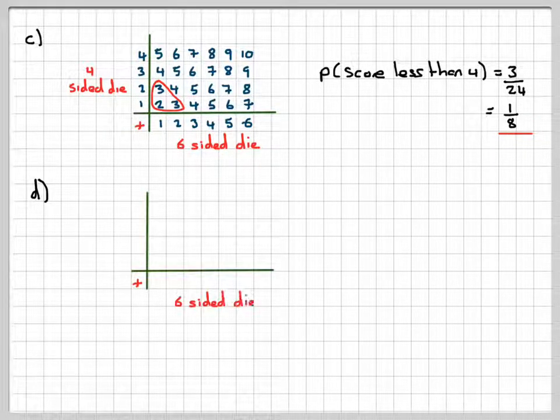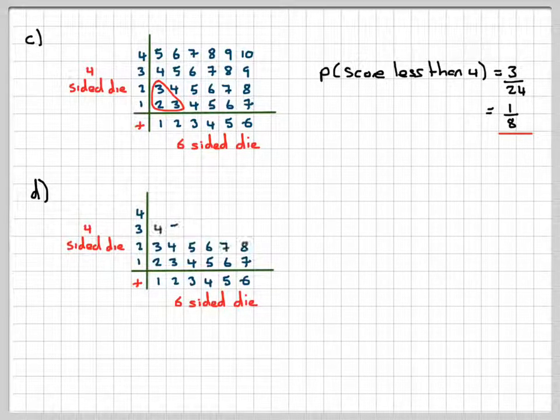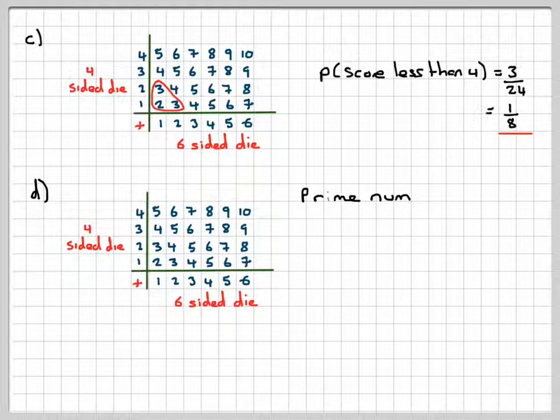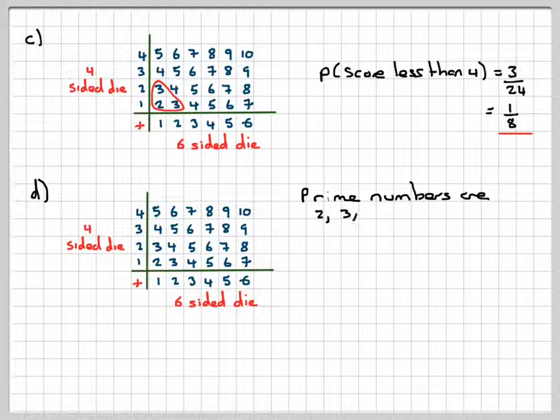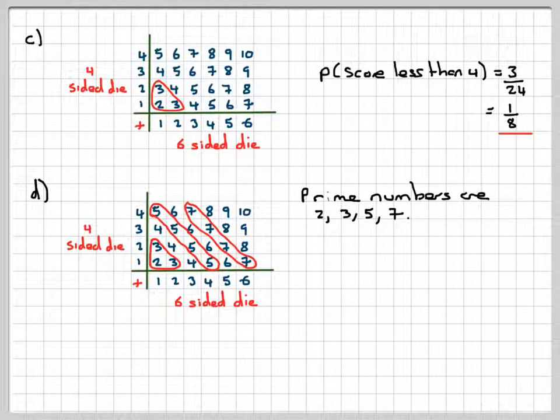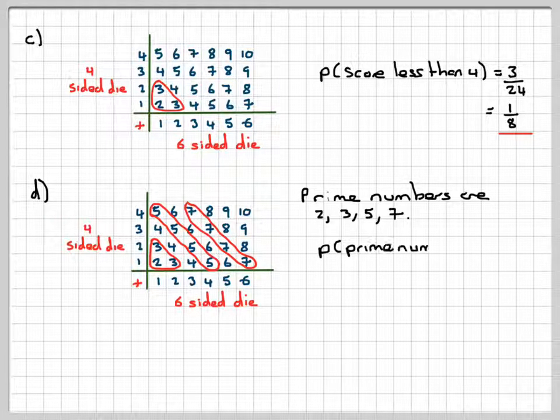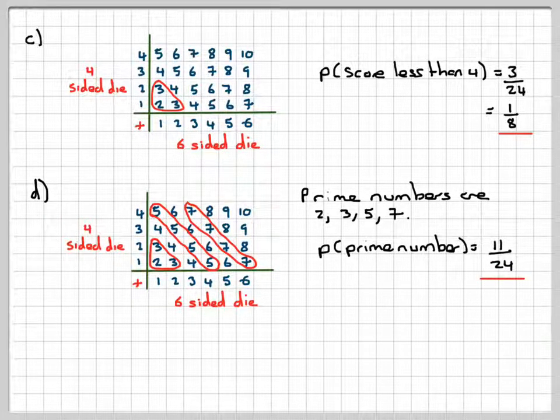Part D. Probability of being a prime number. So the prime numbers here between 2 and 10 are 2, 3, 5, and 7. So put a ring around each of those, and we'll add them up. So it's 4 plus 4, which is 8, plus another 3, which is 11. So the probability of being a prime number is going to be 11 out of 24.